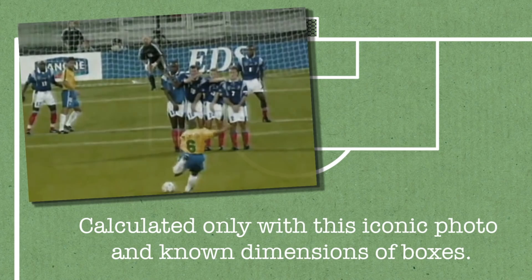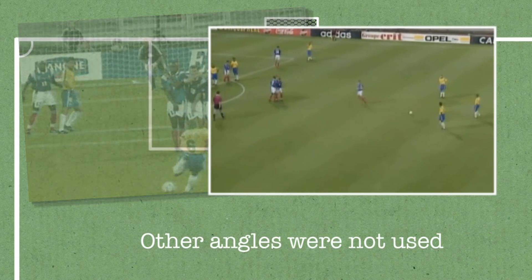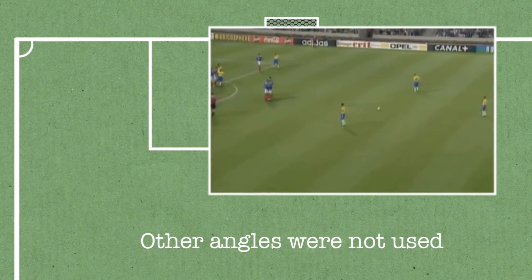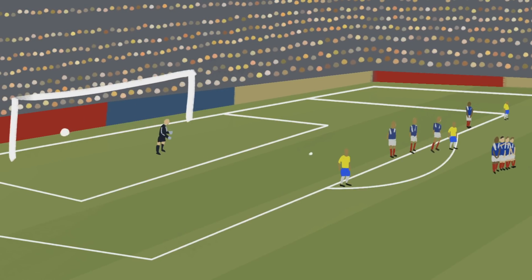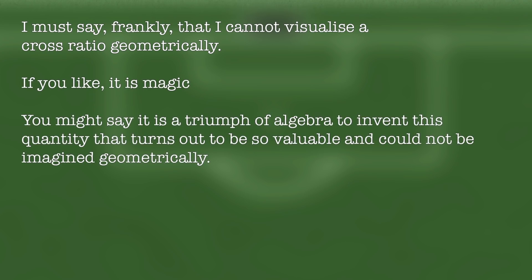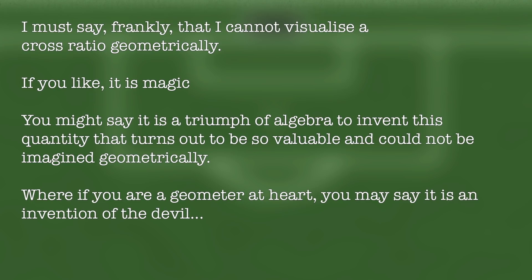I was teaching a class in geometry and it came time to teach projective geometry. I learned about the cross ratio in that class for the first time, and I thought this sounds really powerful. I've come to love the cross ratio — I think it's a beautiful thing. There's a really interesting quote by Robin Hartshorn, one of the world's foremost geometers. In his textbook, when talking about the cross ratio, he says: 'I must say frankly that I cannot visualize a cross ratio geometrically. If you like, it is magic — a triumph of algebra to invent this quantity that turns out to be so valuable and could not be imagined geometrically. Or if you were a geometer at heart, you may say it is an invention of the devil and hated it your whole life.' It tells the story of how in mathematics you don't get to choose what field you work on — you think you're doing geometry and suddenly this very algebraic quantity comes in that you have no geometric intuition for. And I think that's really beautiful.